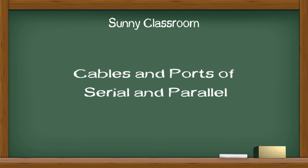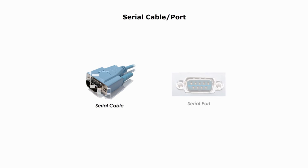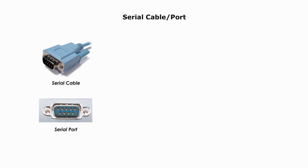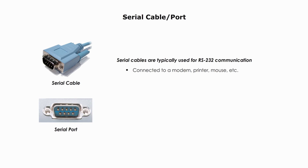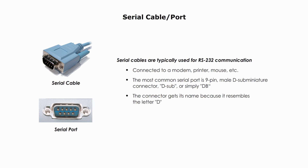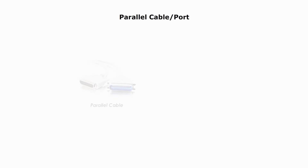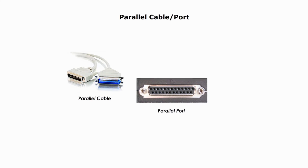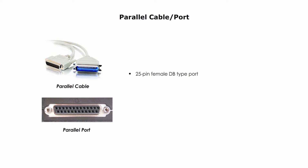Now let's talk about the cables and ports of both serial and parallel transmission. Serial cables are typically used for RS-232 communication. The form of connectors depends on the particular serial port used, and they are used for connections to a modem, printer, mouse, etc. The most common serial port is a 9-pin male D-subminiature connector, or D-sub, or simply DB. The connector gets its name because it resembles the letter D. The parallel port is typically a 25-pin female DB-type port, connected to a printer, scanner, or other peripherals, but they are largely replaced by USB.